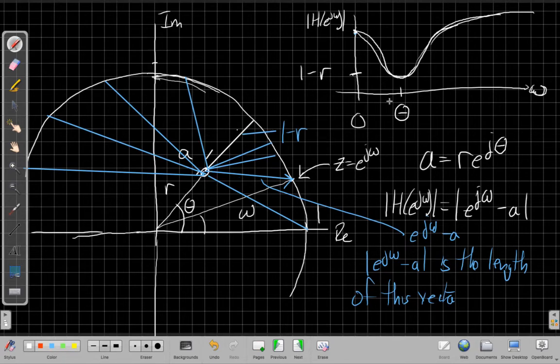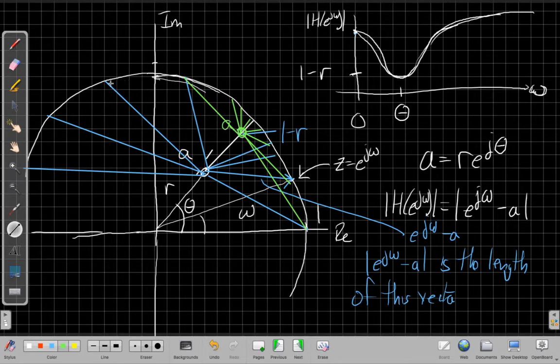So the closer the zero gets to the unit circle, the deeper and sharper this will be. And it'll turn out to be a sharper one. So for example, if I imagine I'm going to draw a new zero, imagine that zero is much closer to the unit circle out here. So this is my new value of a. What would happen? Well, this vector would be very short. If I sort of go through the same exercise here, this would be maybe a little shorter but not too different. And initially they wouldn't be so bad. But as it got close, these vectors get very short.